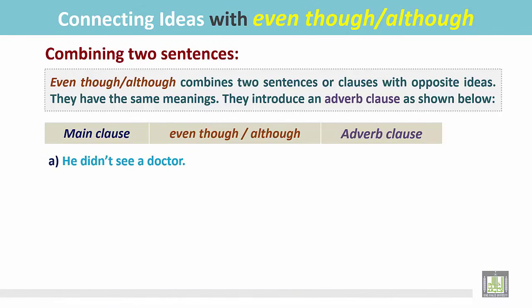A: He didn't see a doctor. B: He was sick. In these two sentences we find they are quite opposite. He was sick and he should see a doctor, but he didn't. Let's see how we join them.